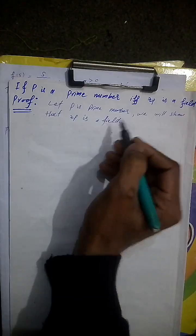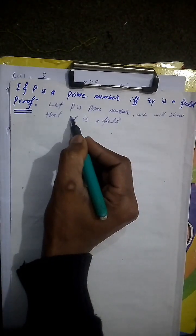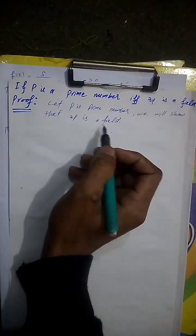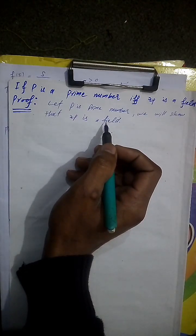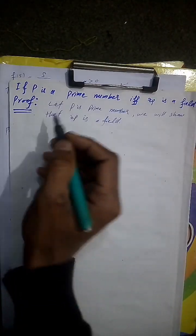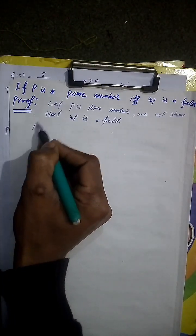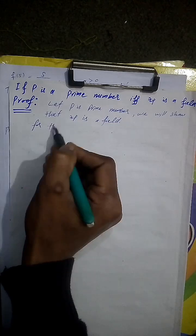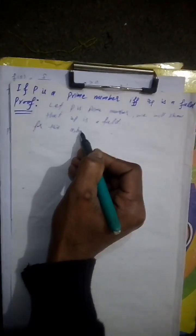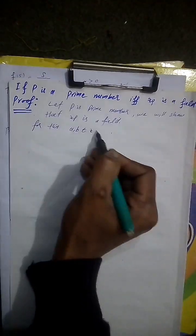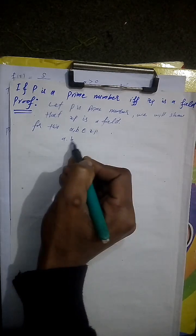For this, Zp is a field. Show Zp is an integral domain to show field. For this field, automatically, this p then...